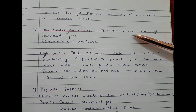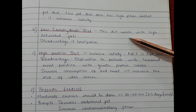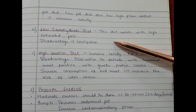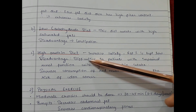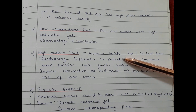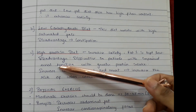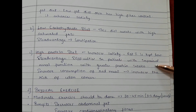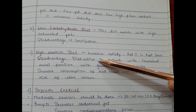The second dietary approach is a low carbohydrate diet, which works with high saturated fats. The disadvantage includes constipation. The third is a high protein diet. This type of diet increases satiety, and the fat percentage is kept low. A disadvantage is that patients with impaired renal function face difficulties with greater protein intake.